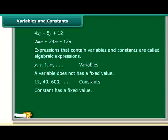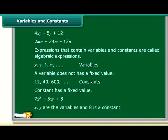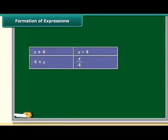So in an expression, 7x² plus 5xy plus 8, x and y are the variables and 8 is a constant. Algebraic expressions are formed by combining variables and constants with the help of addition, subtraction, multiplication, and division.